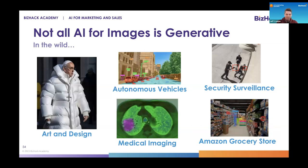You may have seen the Pope in the puffer jacket — this was an image created with Midjourney and a little bit of Photoshop that went viral around the internet. This is not a real picture. But not all AI for images is generative. We also use a lot of image-focused artificial intelligence for machine vision: autonomous vehicles like Teslas rely on AI to process imagery, we've made shocking advancements in cancer detection using these tools, as well as security surveillance. If you've seen the prototype Amazon grocery stores where you don't need to check out because the machine is watching you shop — these are all examples of AI for images in the wild.